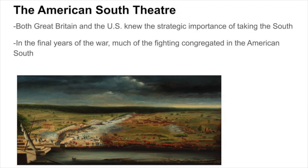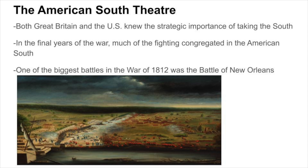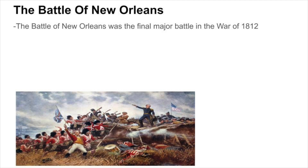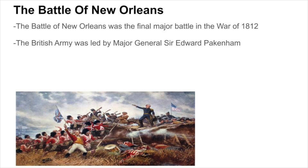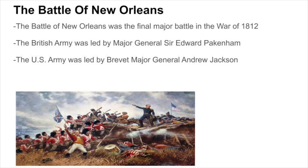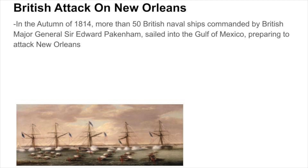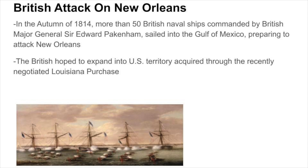One of the biggest battles on the Southern Front and in the War of 1812 itself was the Battle of New Orleans. The Battle of New Orleans was the final major battle in the War of 1812, pitting the British army led by Major General Sir Edward Pakenham against the U.S. Army led by Brevet Major General Andrew Jackson. Ironically, the battle actually took place after the War of 1812 officially ended, primarily because the news of the signing of the Treaty of Ghent did not reach the U.S. in time. In the autumn of 1814, more than 50 British naval ships commanded by Major General Sir Edward Pakenham sailed into the Gulf of Mexico, preparing to attack New Orleans, Louisiana, primarily in hopes of aiding British expansion into U.S. territory acquired through the Louisiana Purchase.